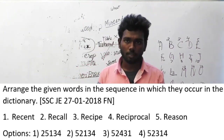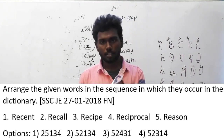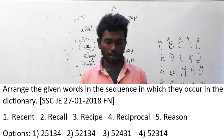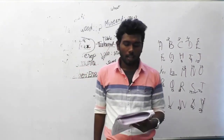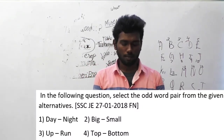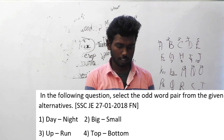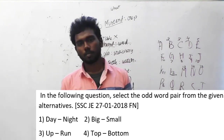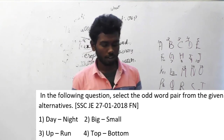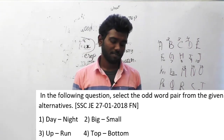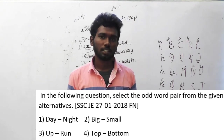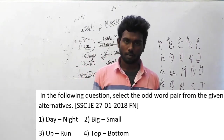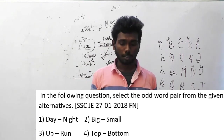Let's move on to question 147. In the following question, select the odd word pair from the given alternatives. This question was asked in SSC JE, 27th January 2018, forenoon session. The pairs are: day-night, big-small, up-run, top-bottom. Day and night, big and small, top and bottom are all opposite to each other. But up and run are not opposite to each other. So option C, up-run, is the odd pair.